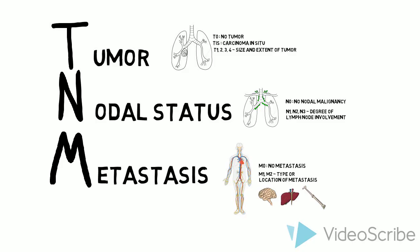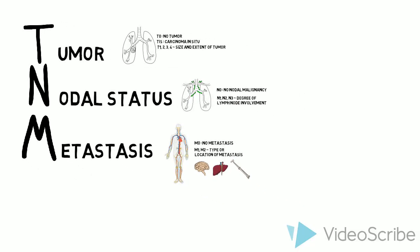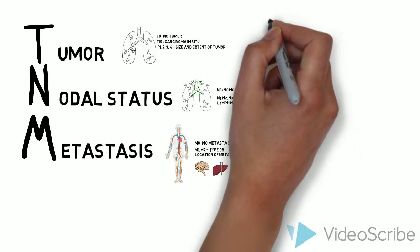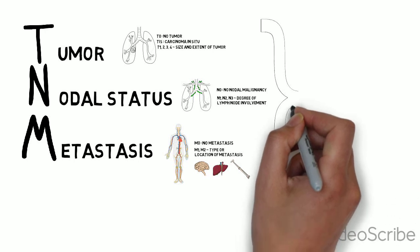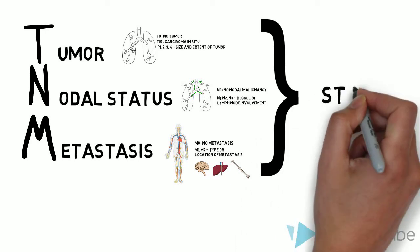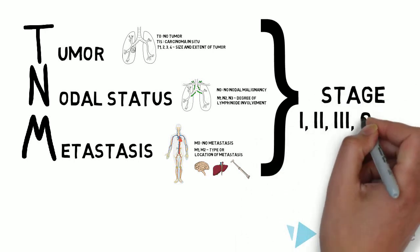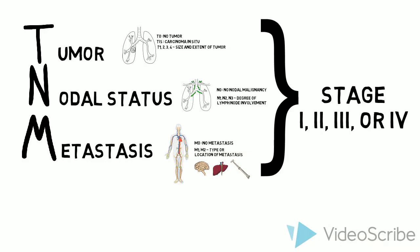Healthcare professionals often combine the TNM staging into an overall Roman numeral stage ranging from stage I to stage IV. Stage I tumors tend to be early tumors with no nodes or metastases and are generally curable. Stage IV tumors tend to present with metastases or advanced nodal stage, representing spread to other organs, and are usually incurable.